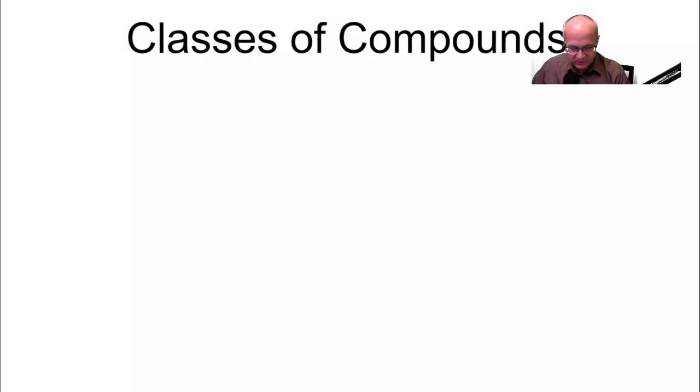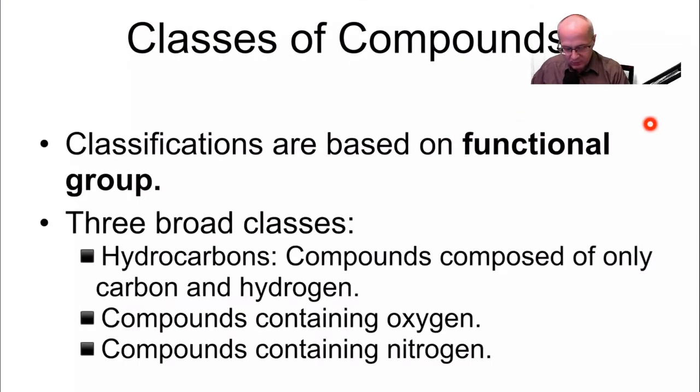Classifications are based on functional groups. Functional groups are very important. If you can identify a functional group, you can identify a class. One of the more common functional groups, carbonyl. Carbon double bonded to oxygen. Now, carbonyl is not a class. Carbonyl is a functional group. A functional group is not a class. It can help you identify classes, though. A lot of classes have carbonyl. If you see a carbonyl, it already eliminates a bunch of possibilities.